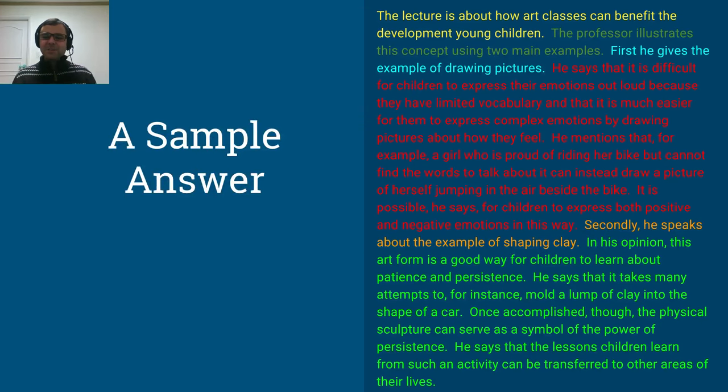Secondly, he speaks about the example of shaping clay. In his opinion, this art form is a good way for children to learn about patience and persistence. He says that it takes many attempts to, for instance, mold a lump of clay into the shape of a car. Once accomplished, though, the physical sculpture can serve as a symbol of the power of persistence. He says that the lessons children learn from such an activity can be transferred to other areas of their lives. Finished.